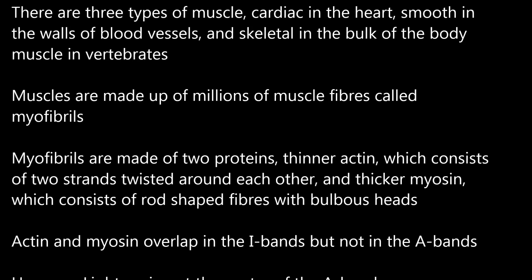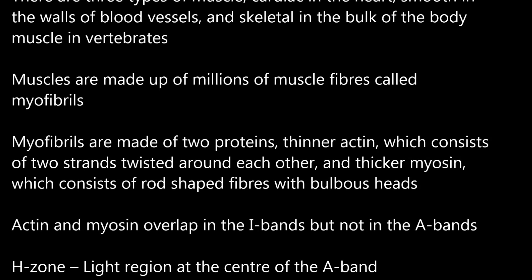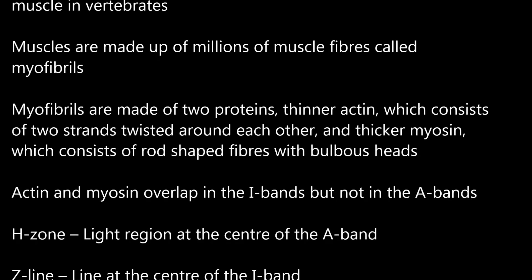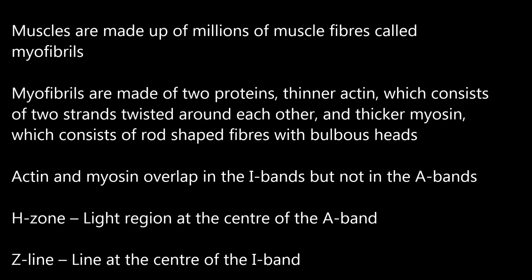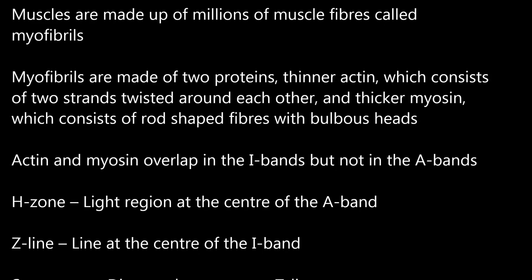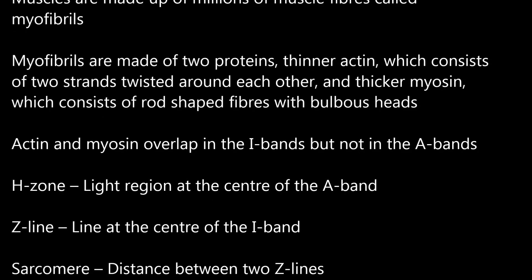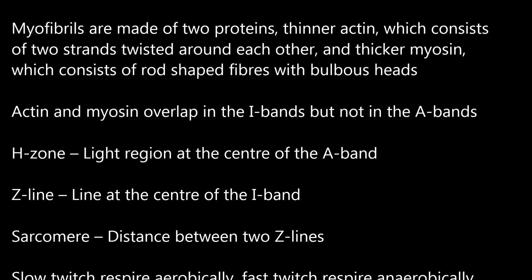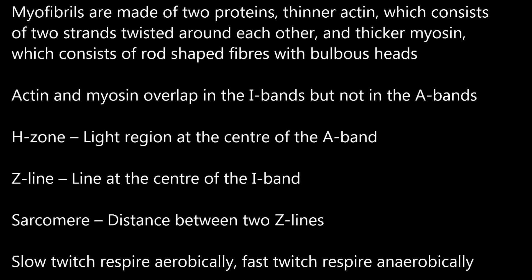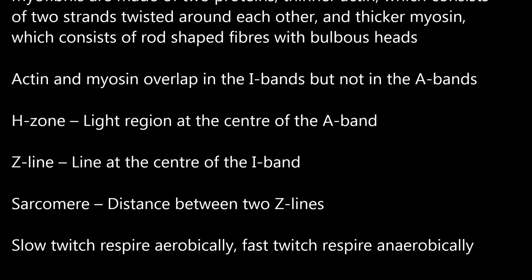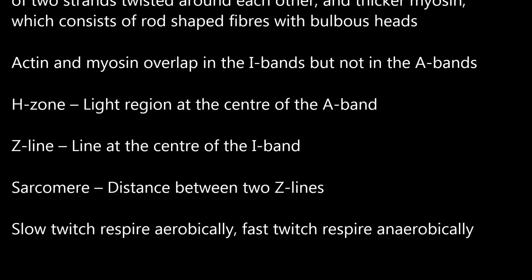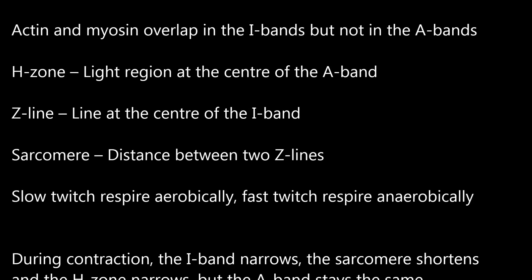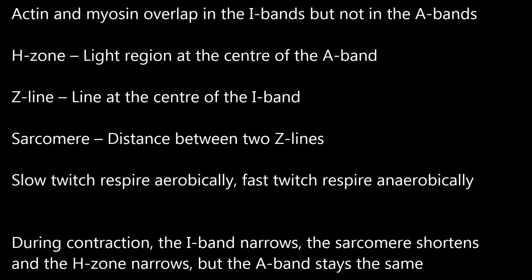There are three types of muscle: cardiac in the heart, smooth in the walls of blood vessels, and skeletal in the bulk of the body muscle in vertebrates. Muscles are made up of millions of muscle fibres called myofibrils. Myofibrils are made of two proteins: thinner actin, which consists of two strands twisted around each other, and thicker myosin, which consists of rod-shaped fibres with bulbous heads. Actin and myosin overlap in the I-bands but not in the A-bands.